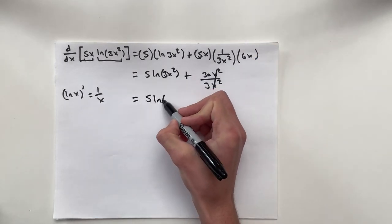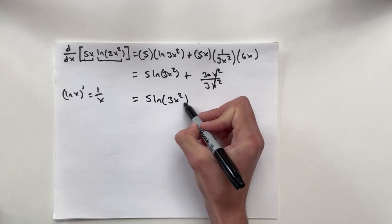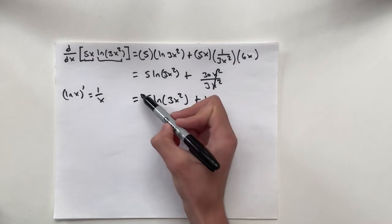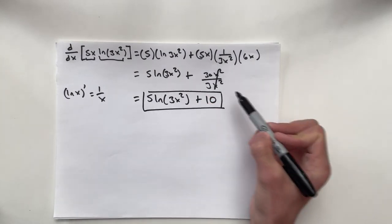So 5 natural log 3x squared plus 10. And that is the solution.